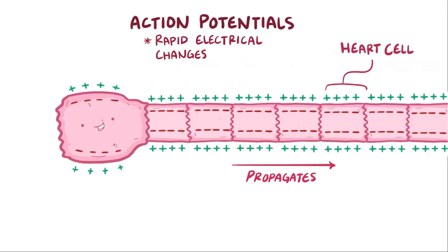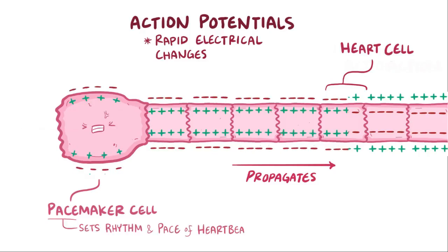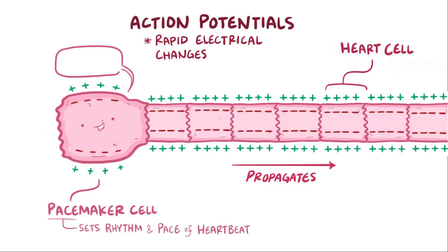That signal's got to start somewhere, so some of these cells, called pacemaker cells, have the responsibility of setting the rhythm and pace of the heartbeat. They're a relatively tiny group and make up only about 1% of the heart cells, but they're able to continually generate new action potentials that get conducted to the rest of the heart, or the other 99%, and these are what tell the heart to pump.